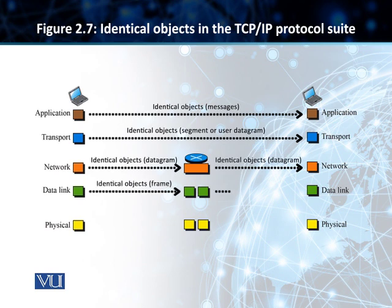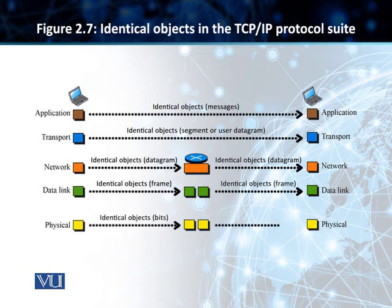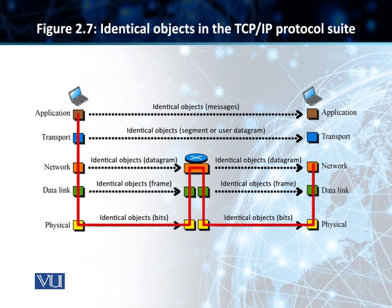Then we have similar objects at the data link layer, and we call them a frame. At the physical level, at the hardware level, the objects that we use — which are identical on both sides — are called bits.